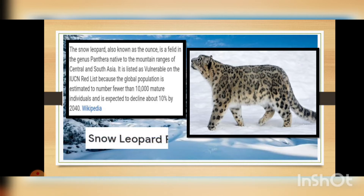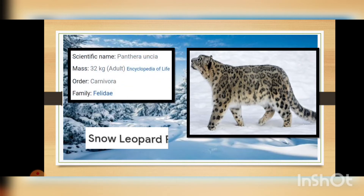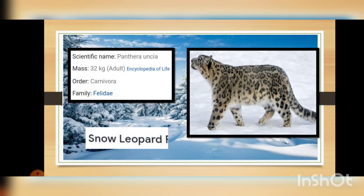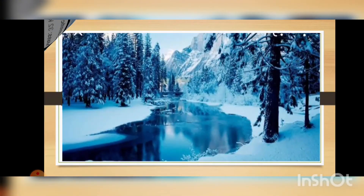Here is another picture of the snow leopard. Its scientific name is Panthera uncia, its mass is 32 kg, order is Carnivora, and it comes from the family Felidae. This is all about the snow leopard.